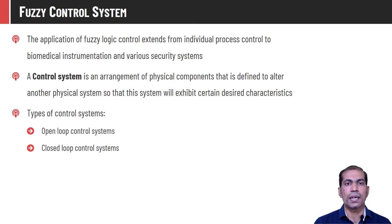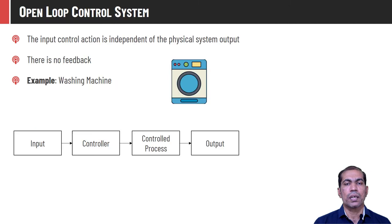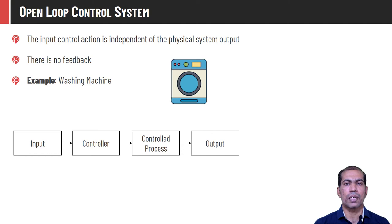Basically there are two types of fuzzy control systems: open loop fuzzy control system and closed loop fuzzy control system. In an open loop fuzzy control system, the input control action is independent of the physical system's output. That is, the output produced by the system will not affect the input parameters — meaning there is absence of a feedback system.